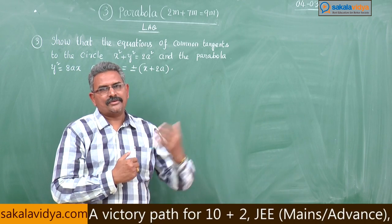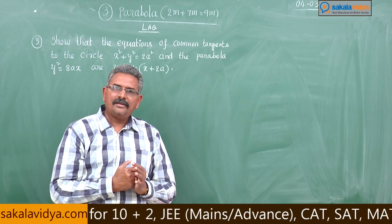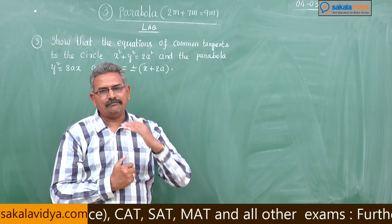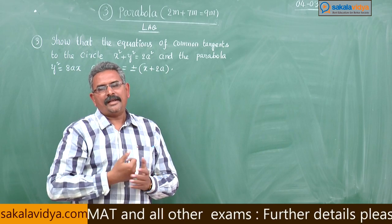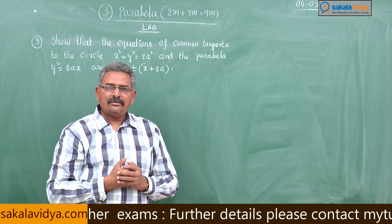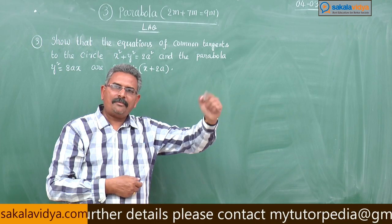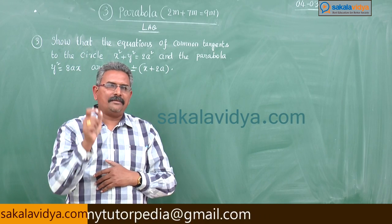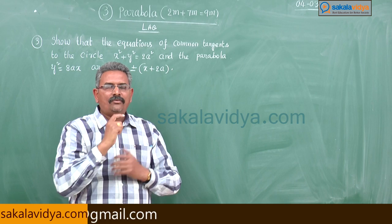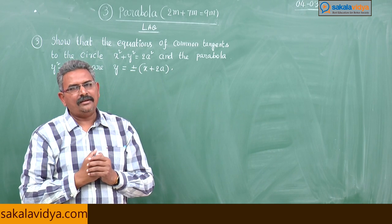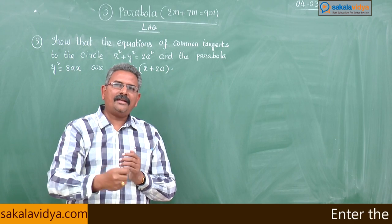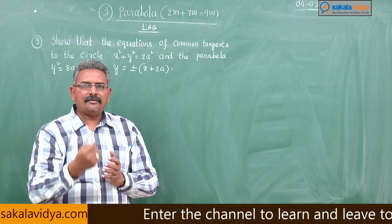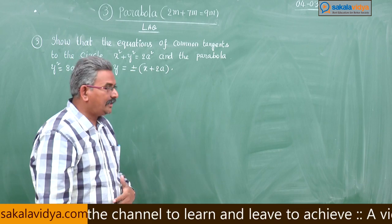Any equation of the tangent to the parabola is y = mx + c, where c = a/m and m is the slope of the tangent. This tangent y = mx + a/m is also tangent to the circle. We apply the tangent condition for the circle to get the m values, then substitute back into y = mx + a/m to get the required answer.